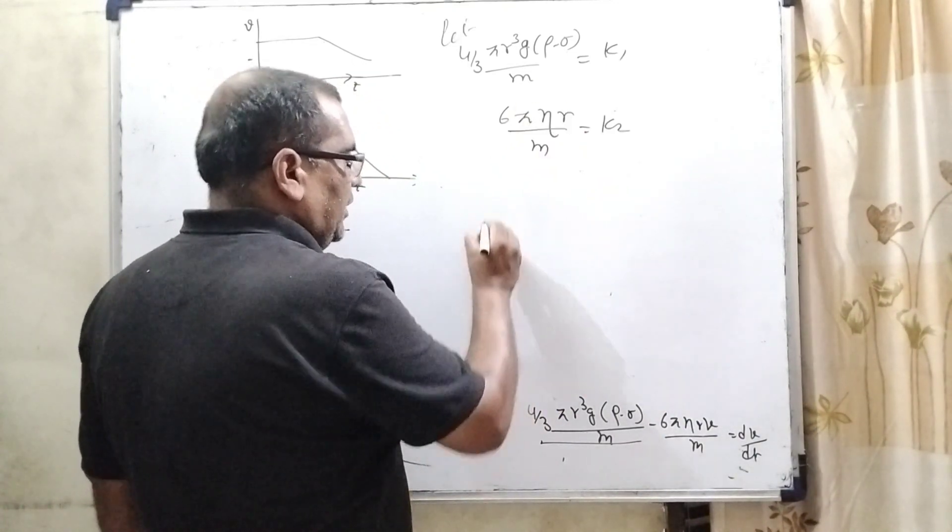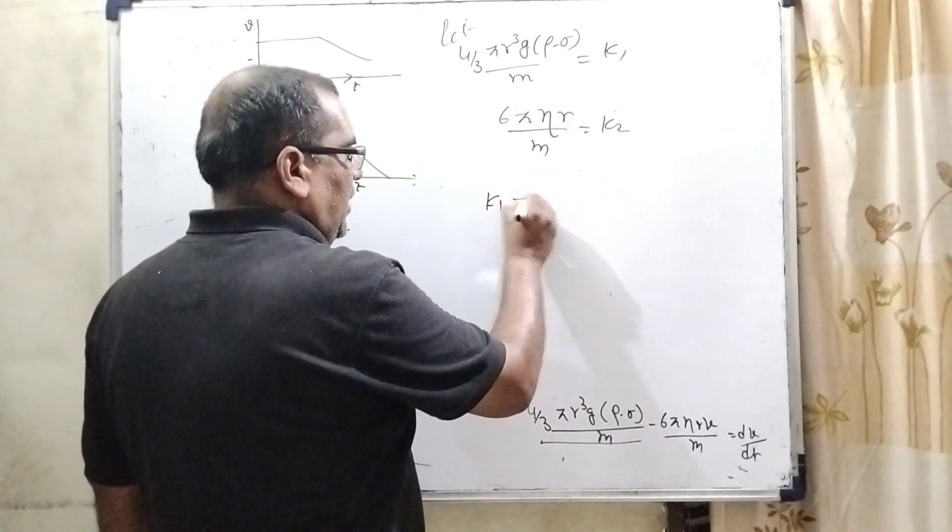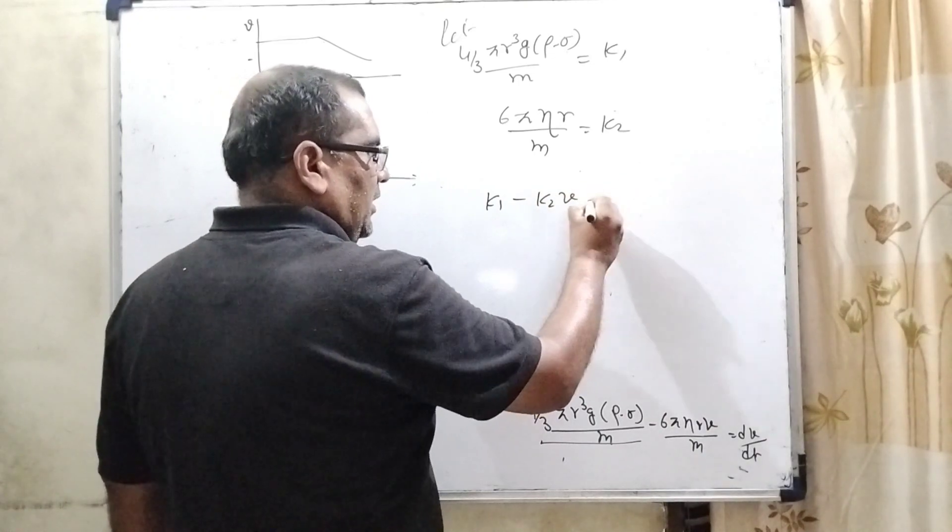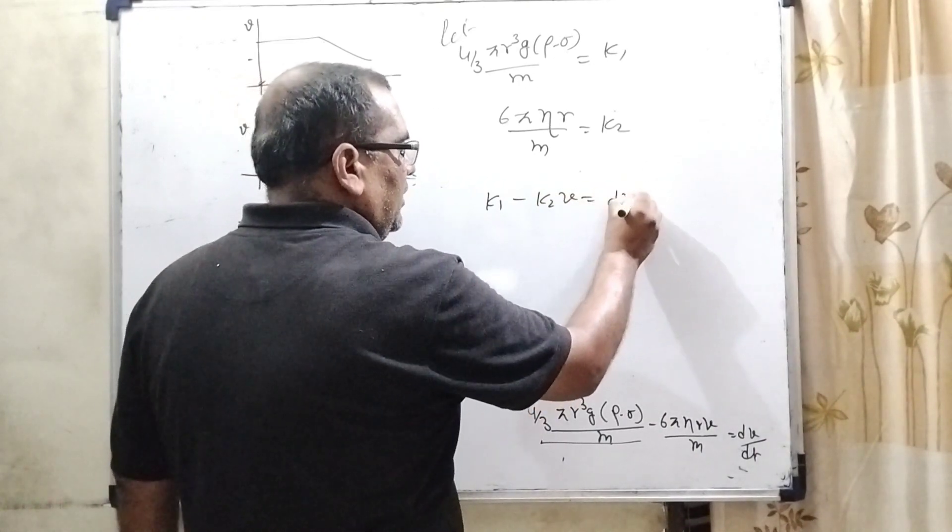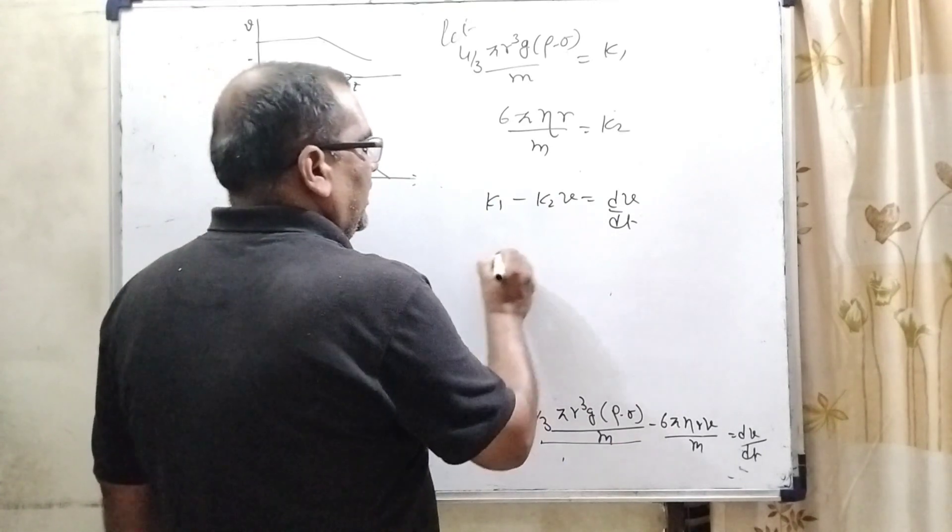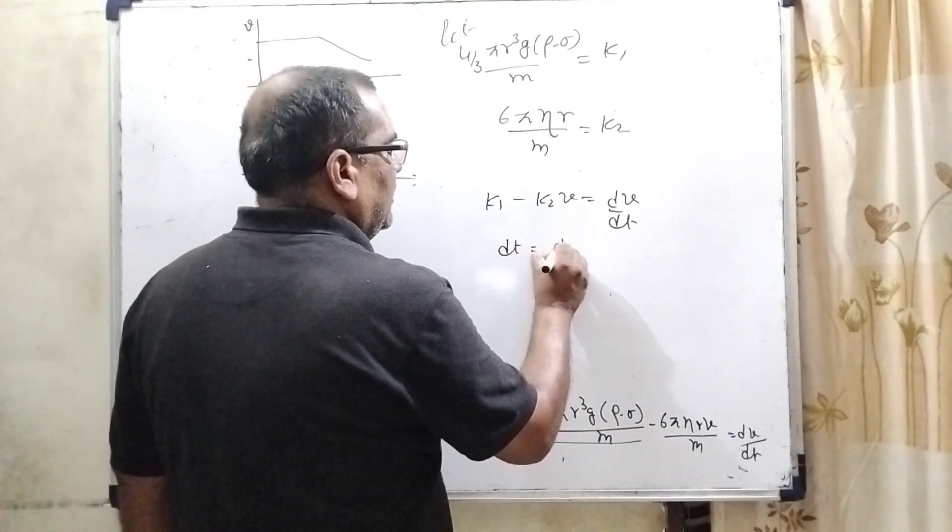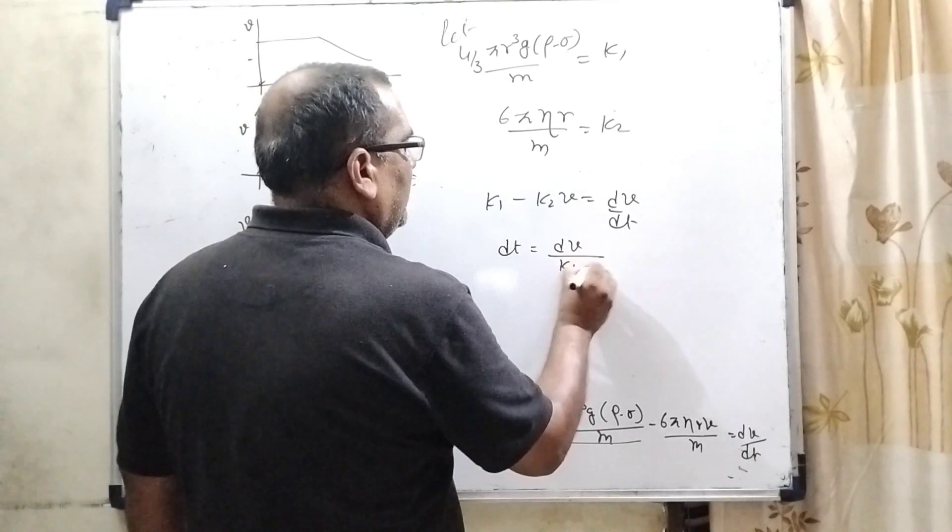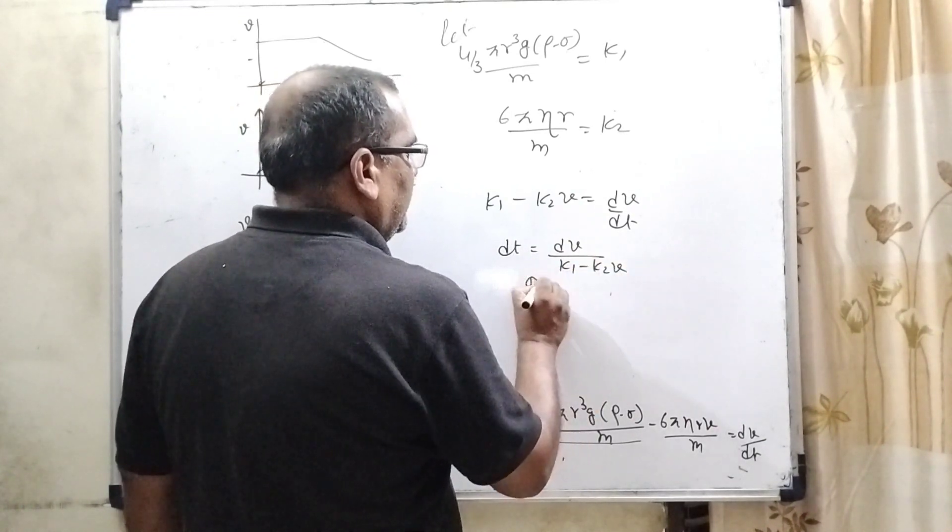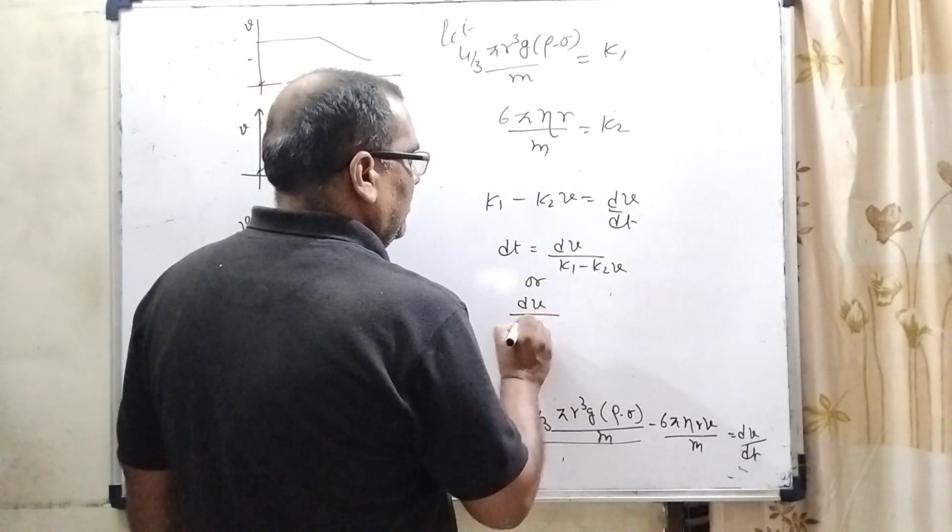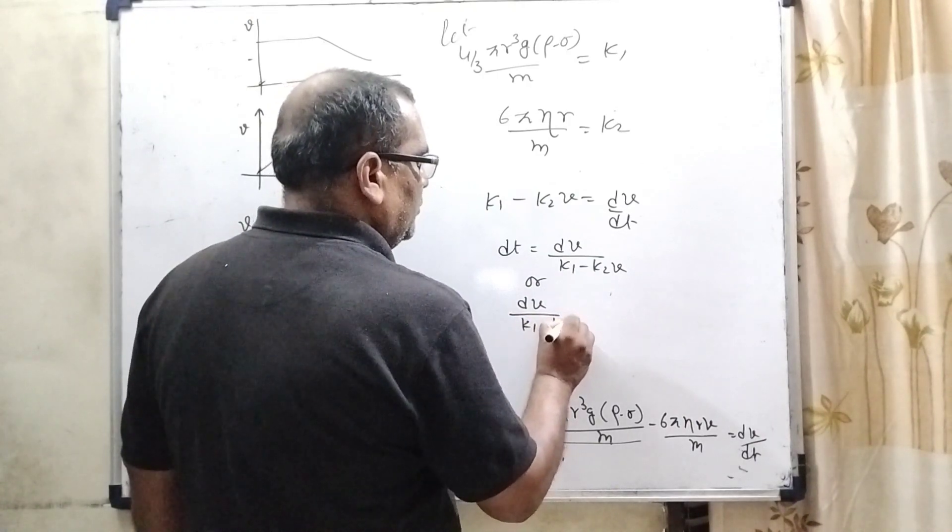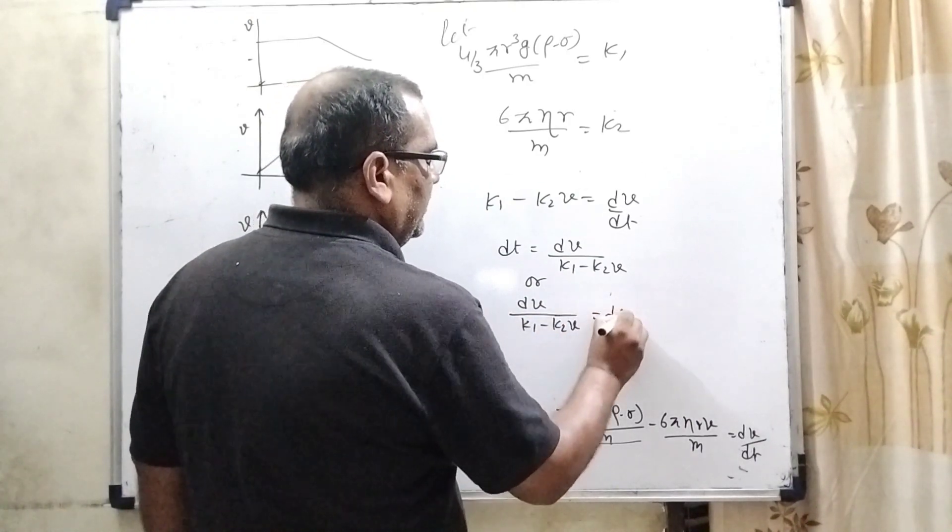So, now substitute this value here K1 minus K2V is equal to dV by dt. Rearranging this equation then it can be written as dV by K1 minus K2V is equal to dt.